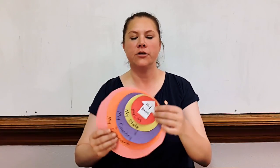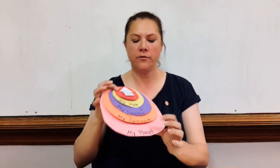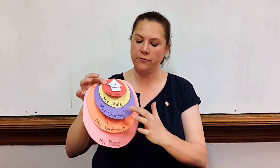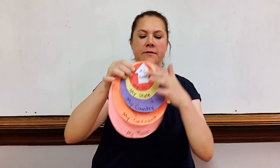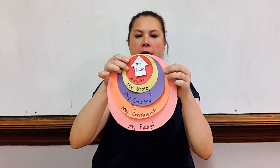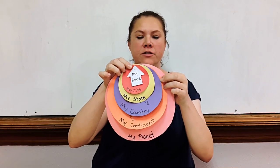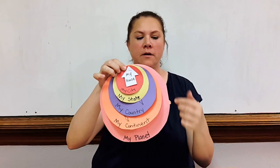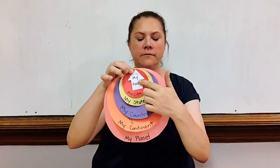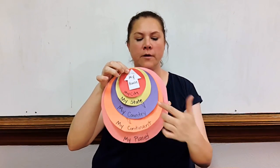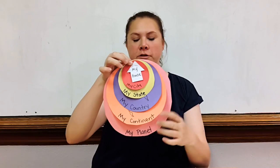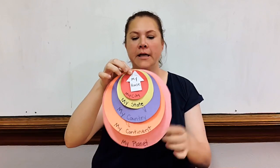What I did was I took six sheets of paper — one, two, three, four, five, six — and they're just circles, and they get smaller and smaller or larger and larger, whichever way you want to read it.